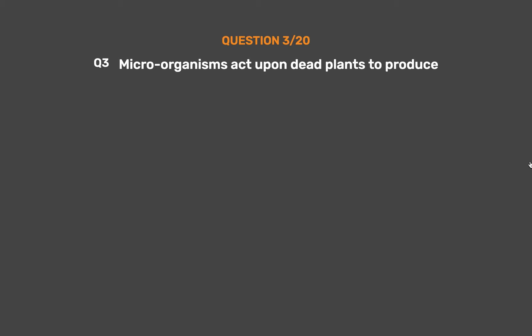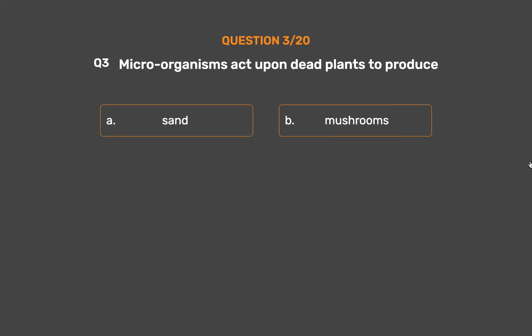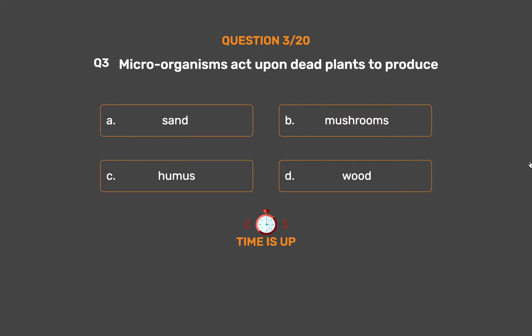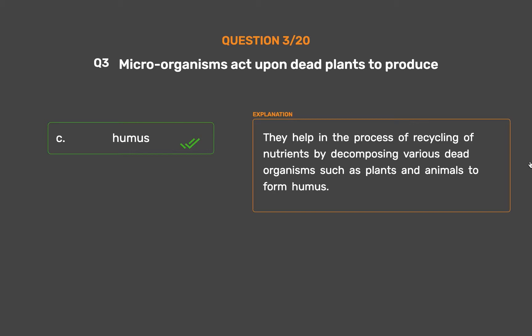Question number 3. Microorganisms act upon dead plants to produce. Option A: Sand. Option B: Mushrooms. Option C: Humus. Option D: Wood. The correct answer is Option C: Humus. They help in the process of recycling of nutrients by decomposing various dead organisms such as plants and animals to form humus.